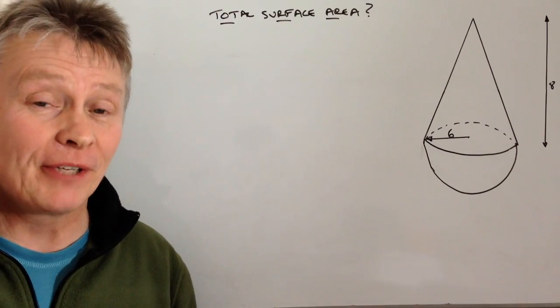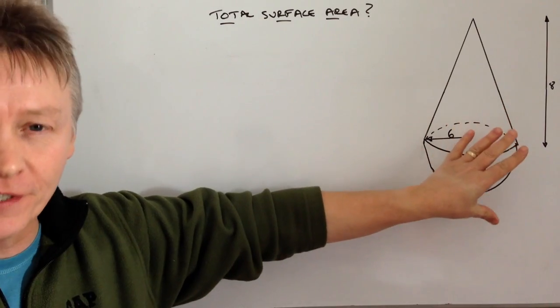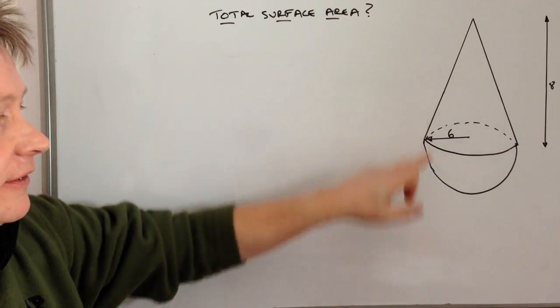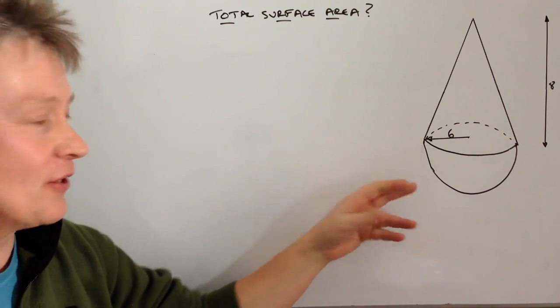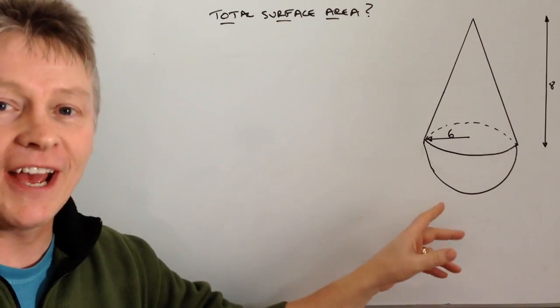Hi and welcome to Three Minute Maths. In this video we're going to be looking at the total surface area of a cone and a hemisphere. It's rather like an ice cream cornet that's been put upside down.